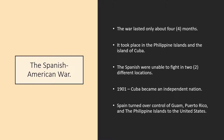The Spanish-American War lasted only about four months and took place in the Philippine Islands in the Pacific and on the island of Cuba. Since Spain was unable to fight effectively in two different locations, the United States was able to do better and Spain was forced to surrender. In 1901, Cuba became an independent nation, and Spain was forced to turn over control of Guam, Puerto Rico, and the Philippine Islands to the United States.